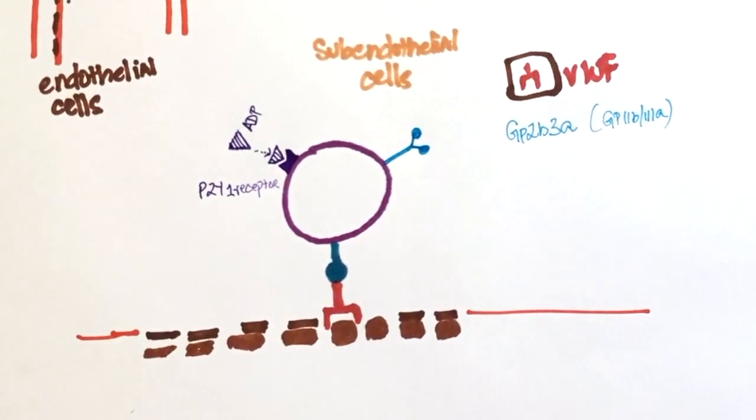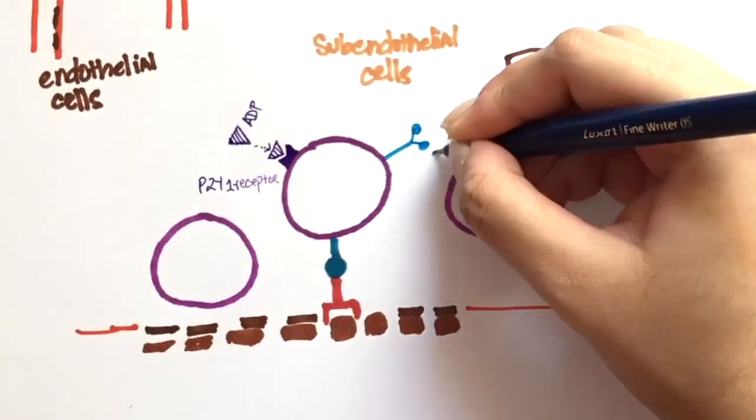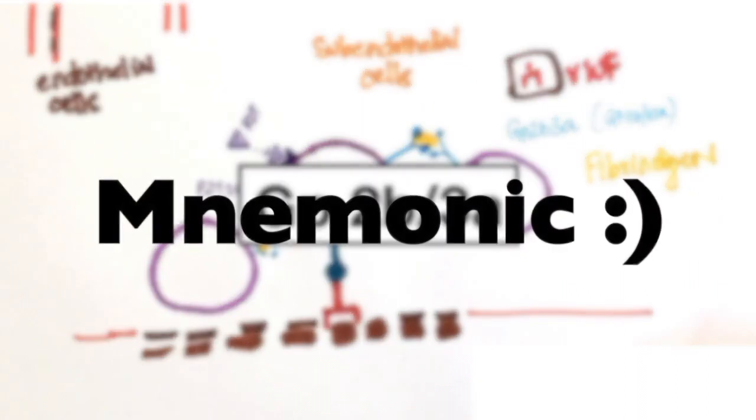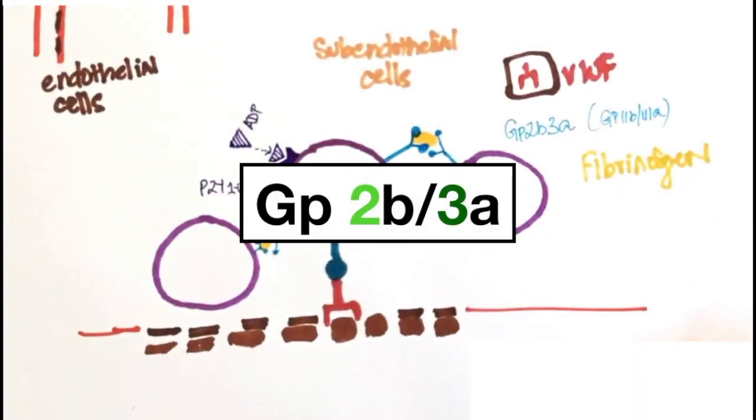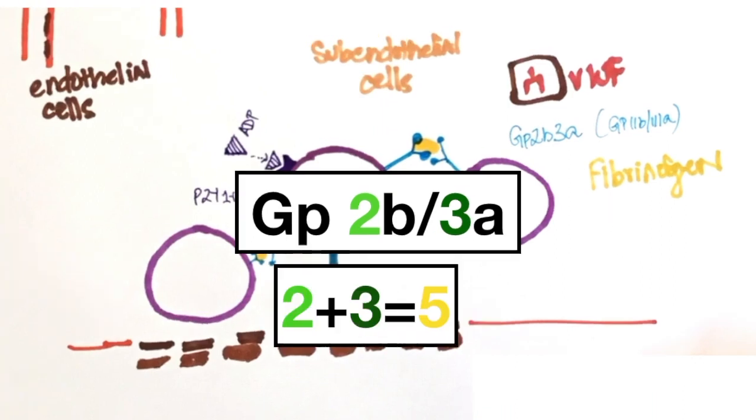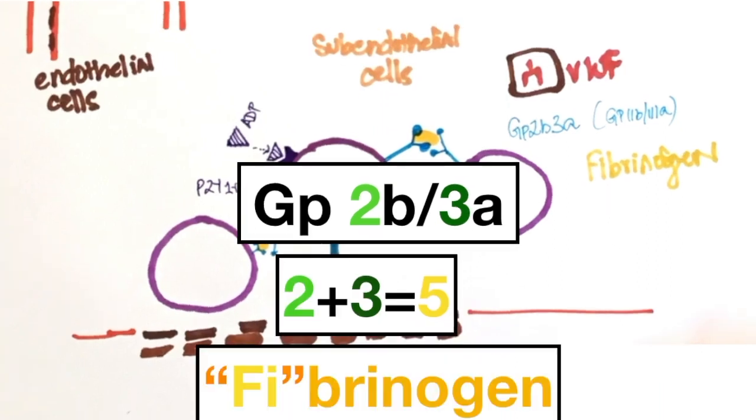Fibrinogen connects one platelet to another by binding to GP2B3A. Here's how I remember this. In GP2B3A, there is 2 and 3. 2 plus 3 is equal to 5 and that reminds me of fibrinogen.